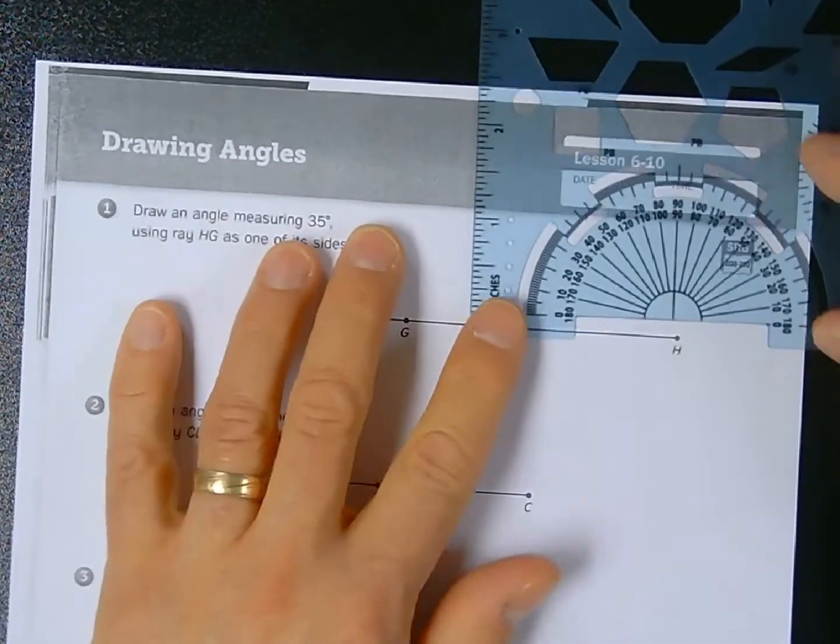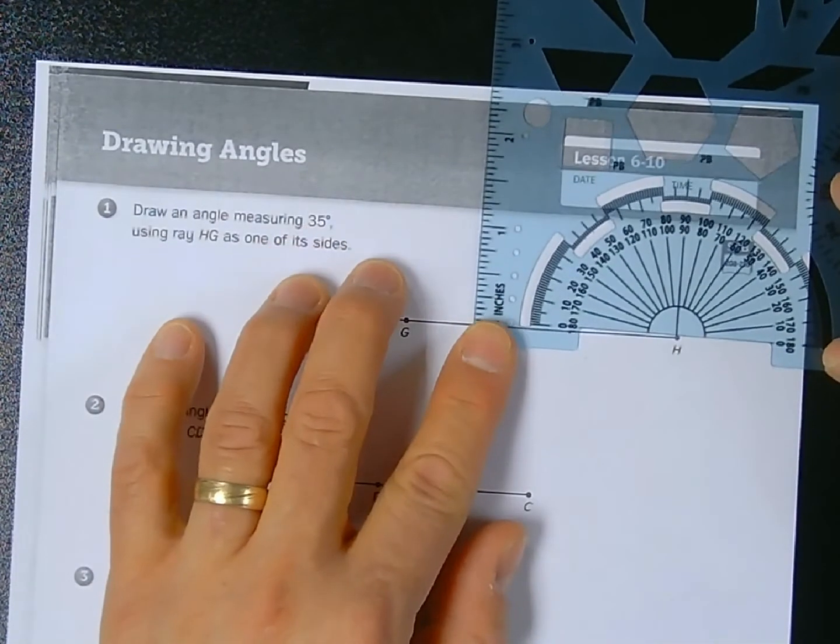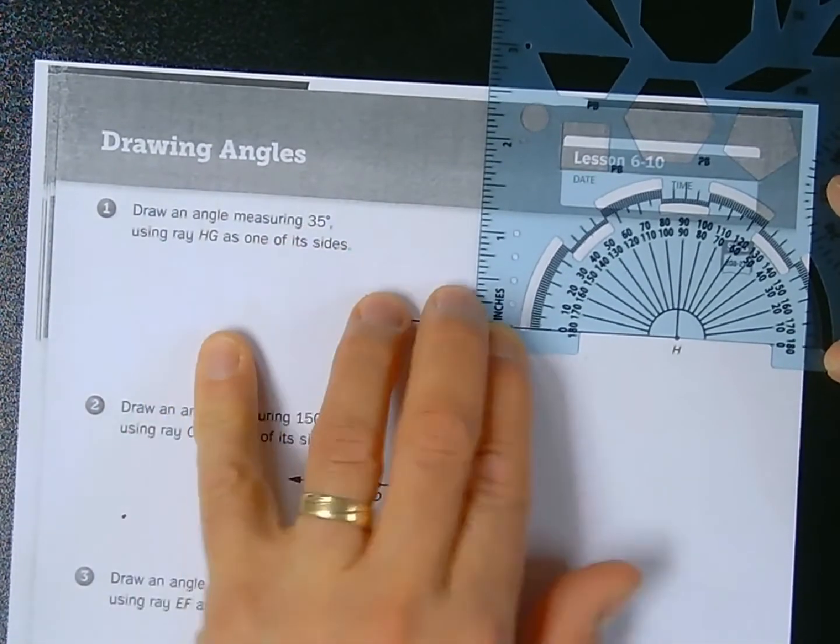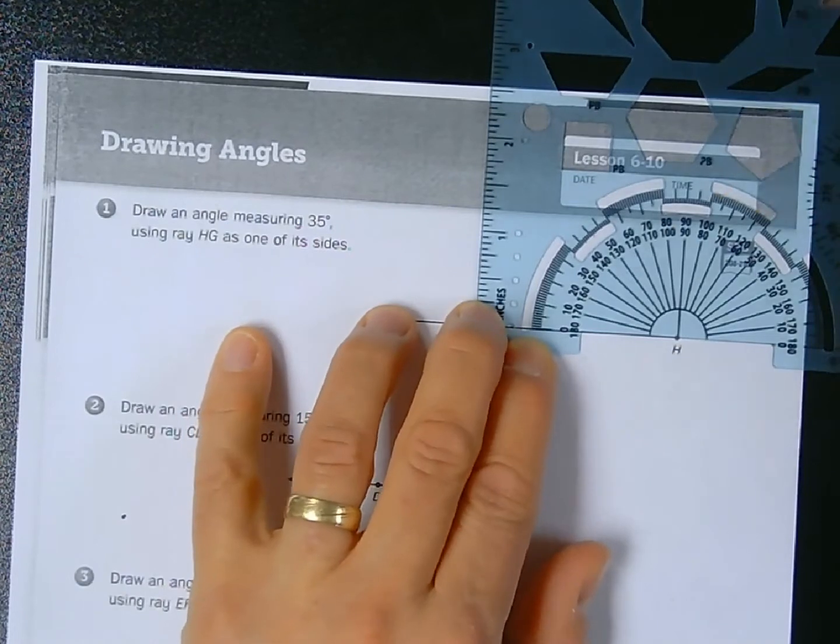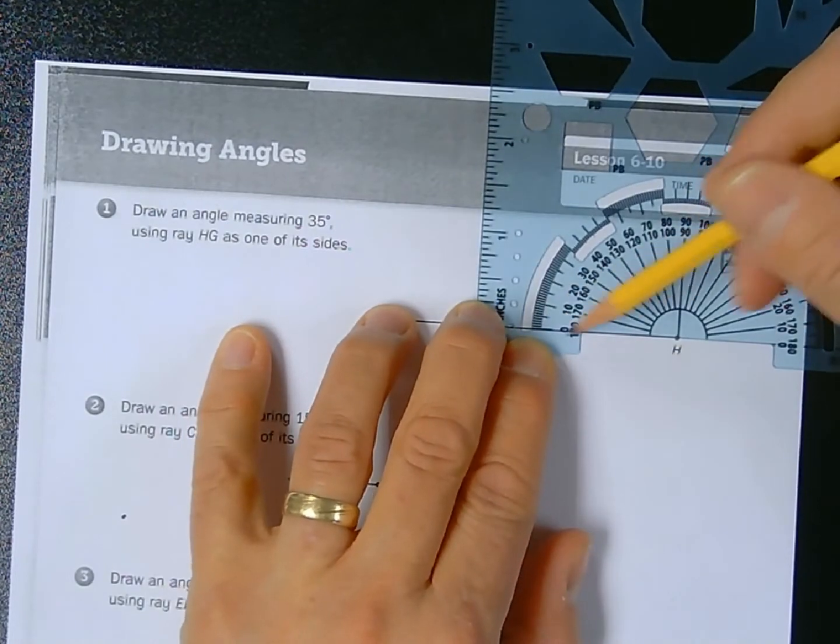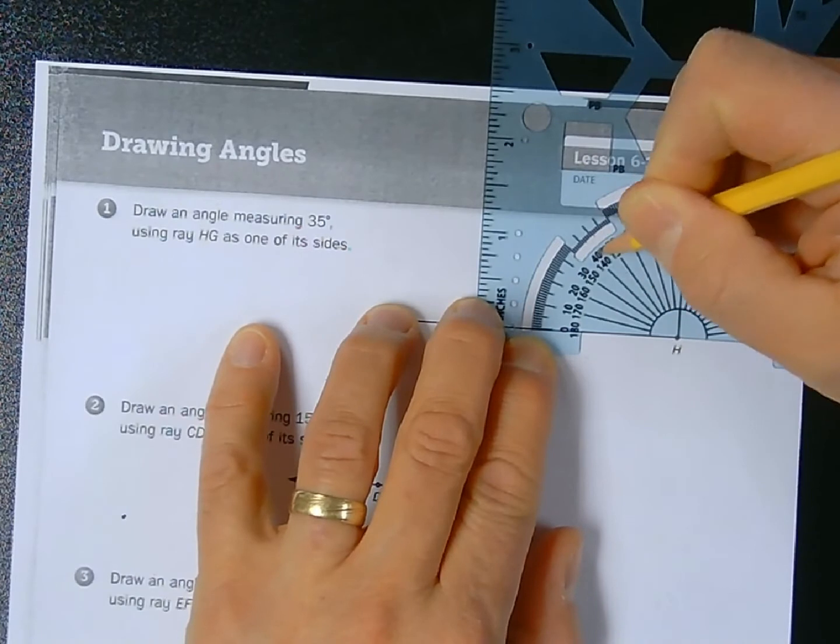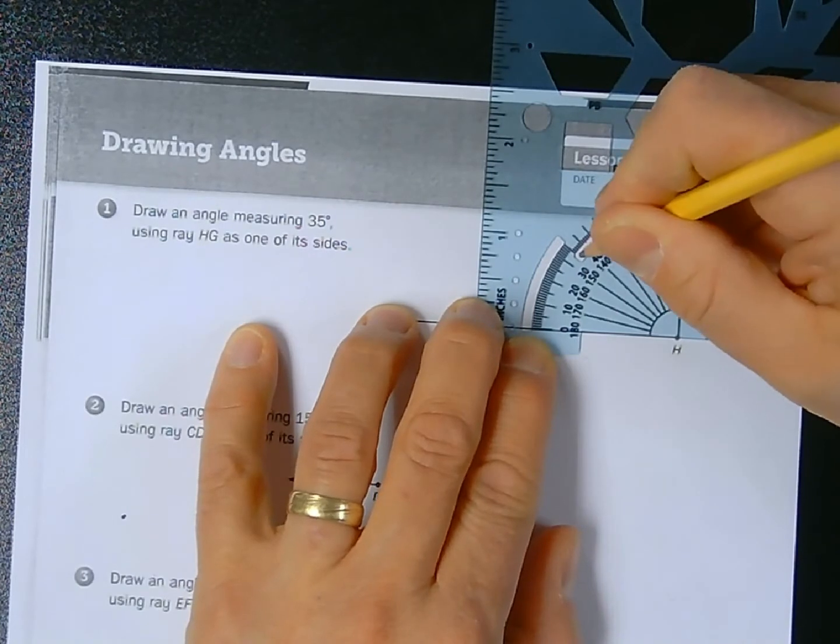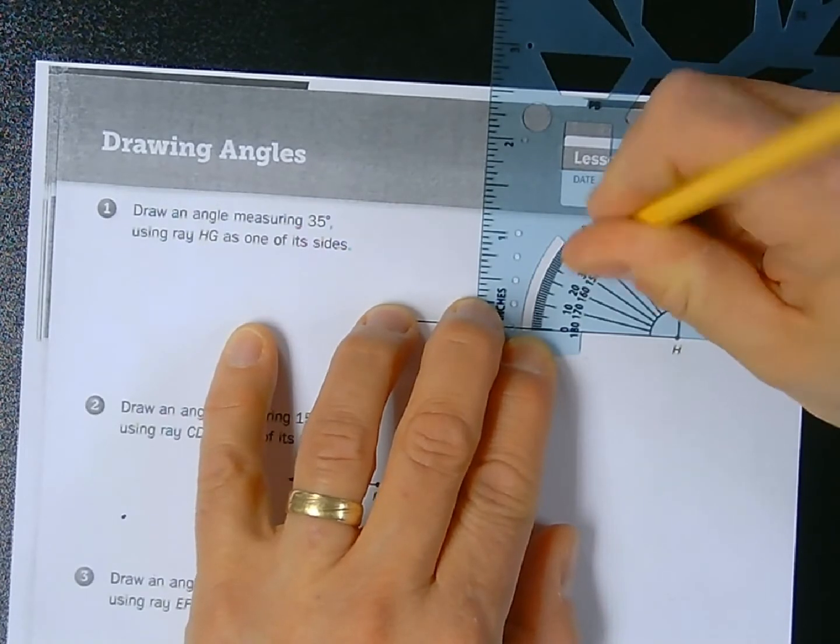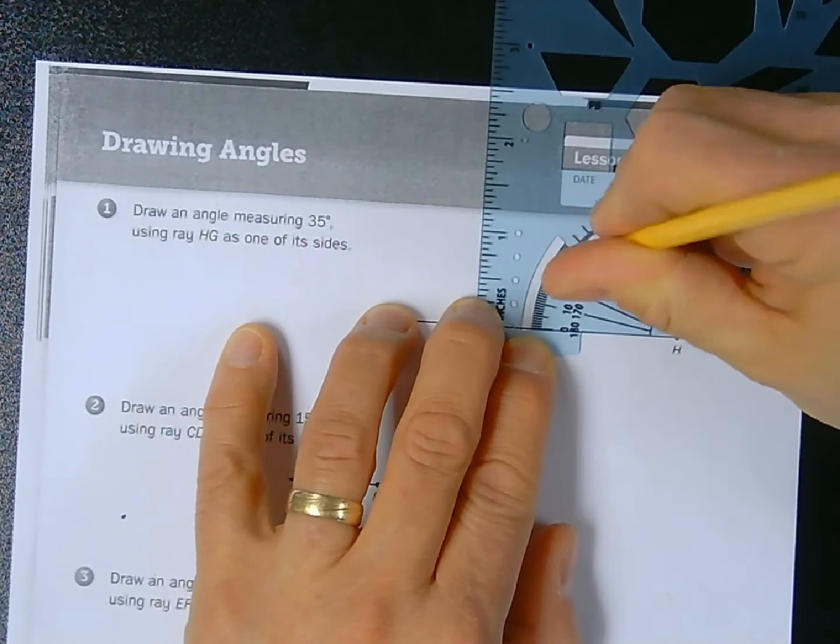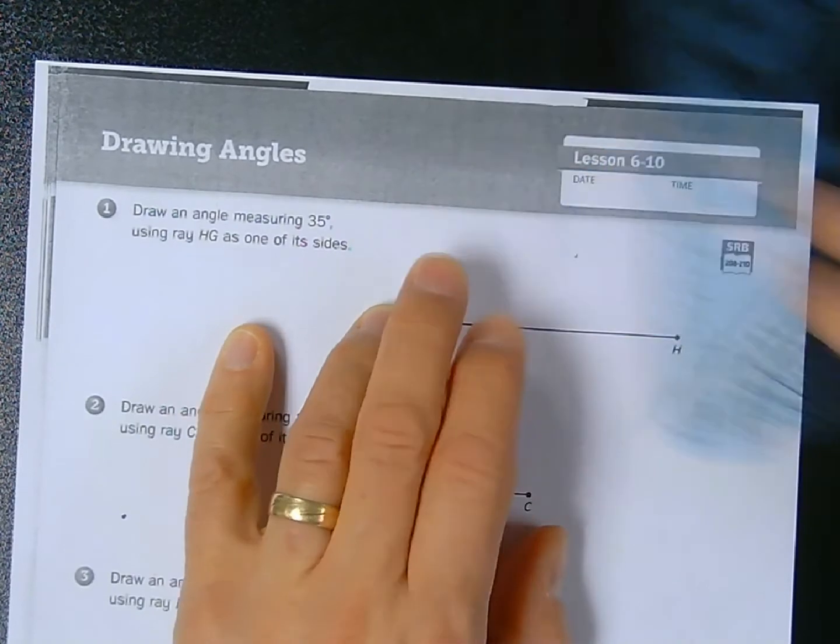I want to find 35 degrees, so I've lined up my vertex or endpoint and I lined up my baseline with my ray. Here's 30, here's 40, 35 would be in the middle, so all I'm doing here is making a little point right like so.